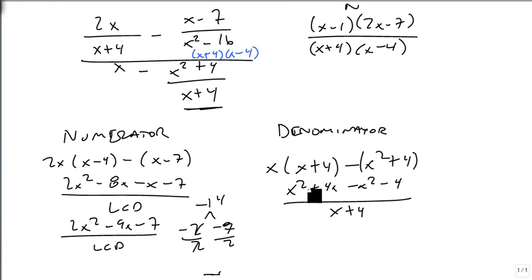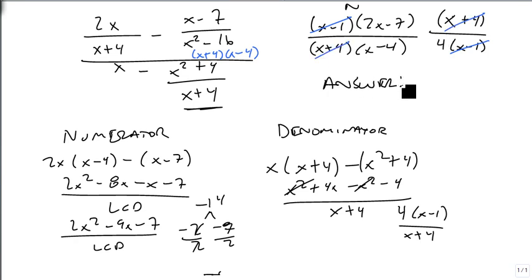So our denominator is 4x minus 4, or 4 times x minus 1 over x plus 4, which we're then going to switch around so it's on top, so reciprocal. We look for anything we have in common, the x minus 1, the x plus 4. And so our answer is 2x minus 7 over 4 times x minus 4.